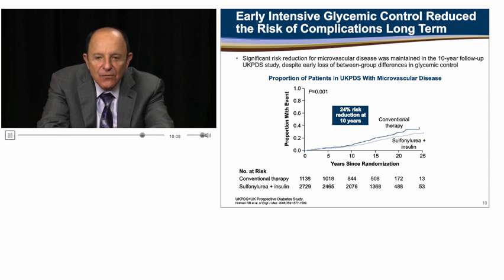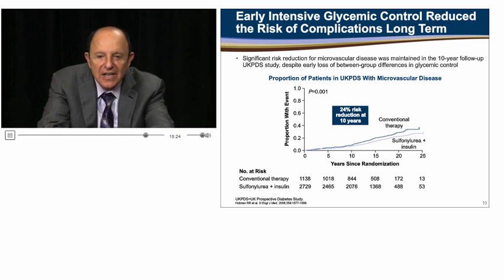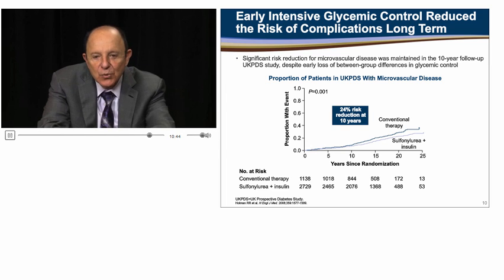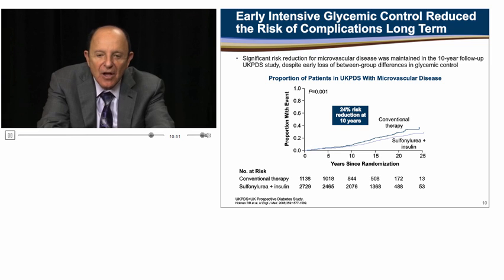10-year follow-up data from the United Kingdom Prospective Diabetes Study demonstrated that improved glucose control led to a reduction in microvascular risk compared to conventionally treated individuals, despite early loss of between-group differences in glycemic control. This graph shows the proportion of patients with microvascular disease in the conventional therapy group versus type 2 diabetic patients treated with a sulfonylurea plus insulin. The A1C was similar between groups after the first year of follow-up; however, at 10 years, the risk reduction for microvascular complications in the sulfonylurea plus insulin group was 24%, providing support for the early initiation of glucose control.